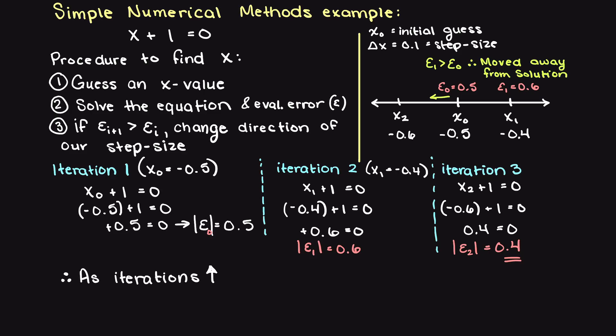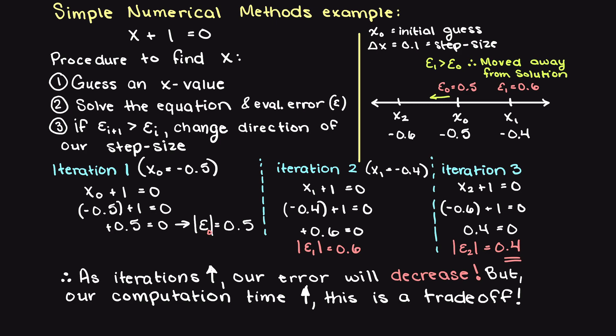Much of numerical methods is about reducing the error of our approximations, and commonly this is a tradeoff between computational speed, how fast we get our answer, versus the error we receive, how far off we are from the exact answer.